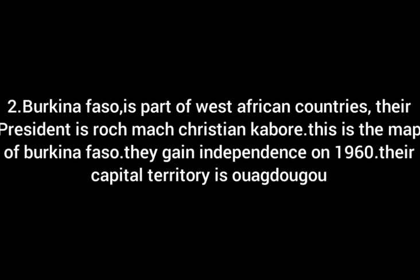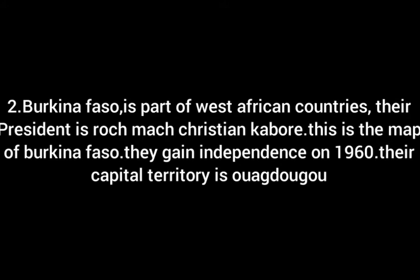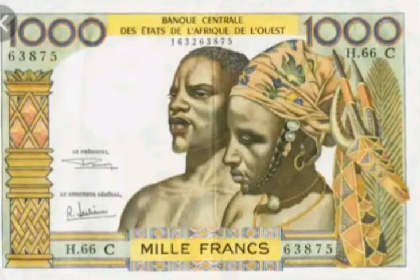Number 2, Burkina Faso. Burkina Faso is part of the West African countries. Their president is Roch Marc Christian Kaboré. This is the map of Burkina Faso. They gained their independence on 1960. This is their currency and flag. Their capital territory is Ouagadougou.